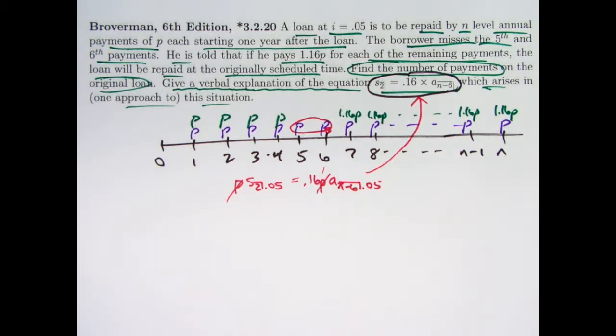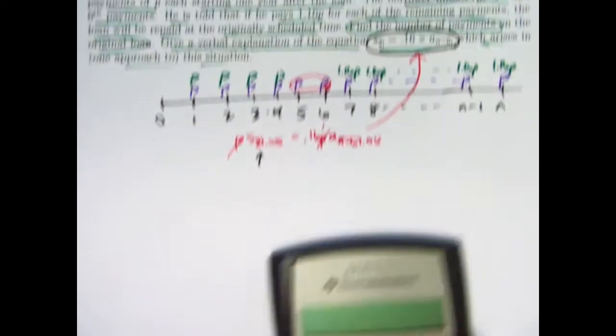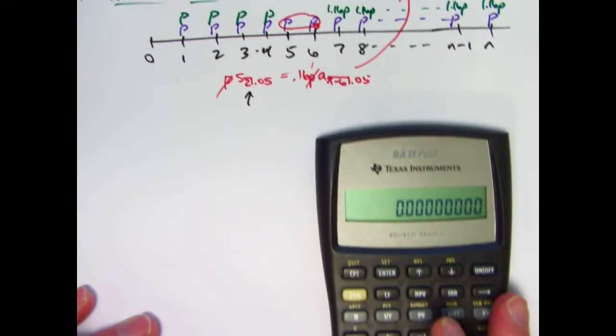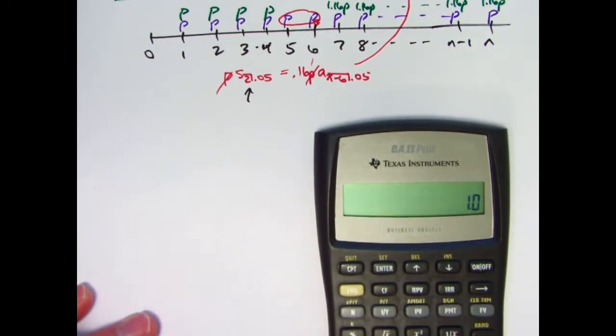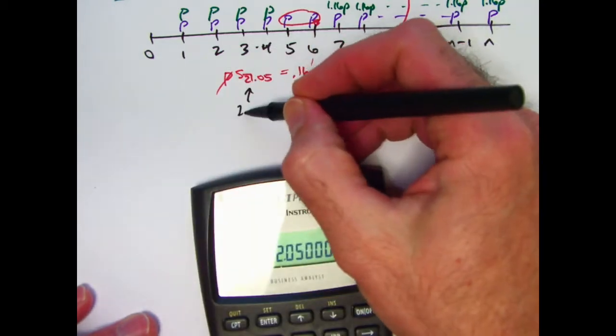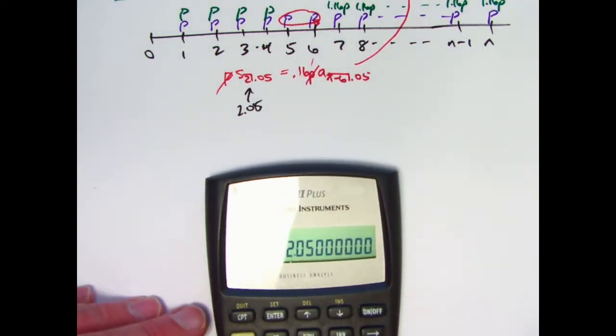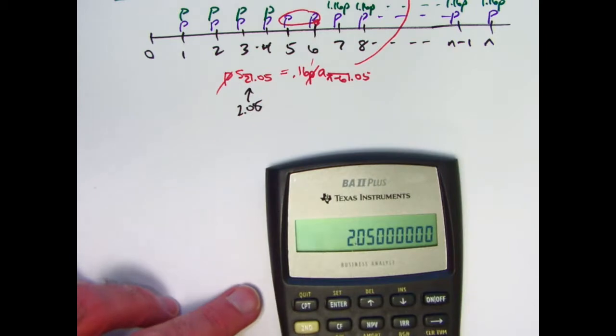In the calculator, calculate this thing. First of all, 1.05 squared minus 1 divided by 0.05. That's 2.05. I can divide both sides by 0.16. Divide by 0.16.